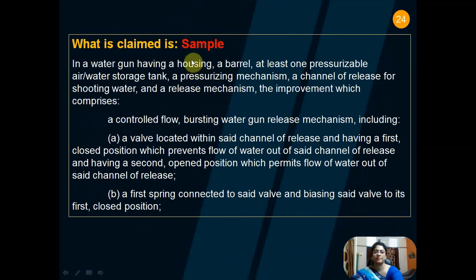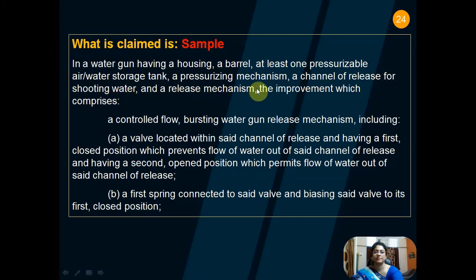Let us now look at a sample claim. What is claimed is: in a water gun having a housing, a barrel, at least one pressurizable air/water storage tank, a pressurizing mechanism, a channel or release for shooting water, and a release mechanism — the improvement which comprises a control flow bursting water gun release mechanism, including a valve located within said channel, and so on.